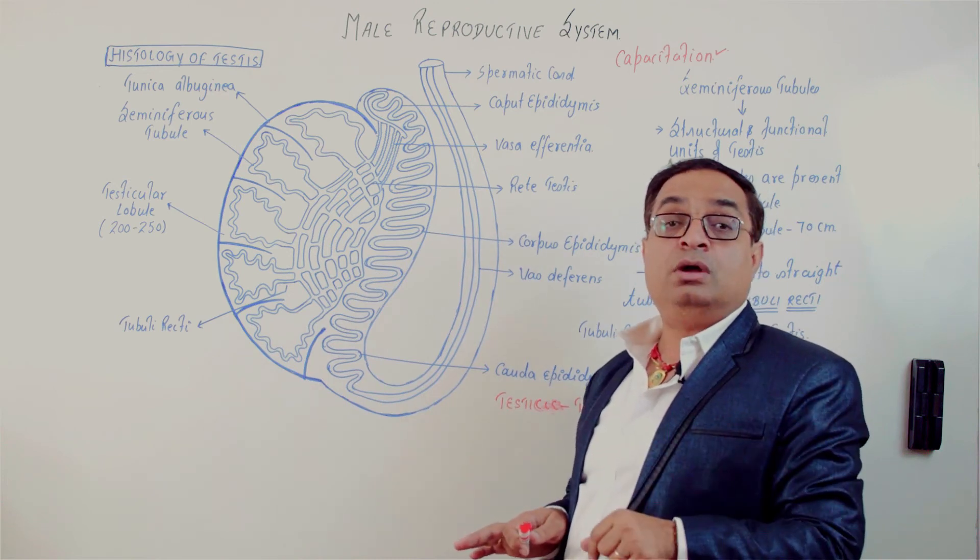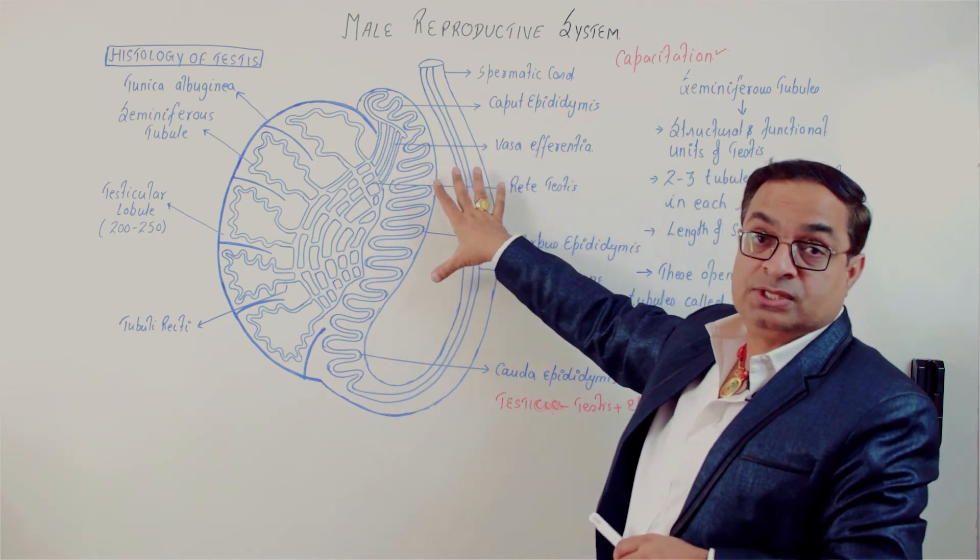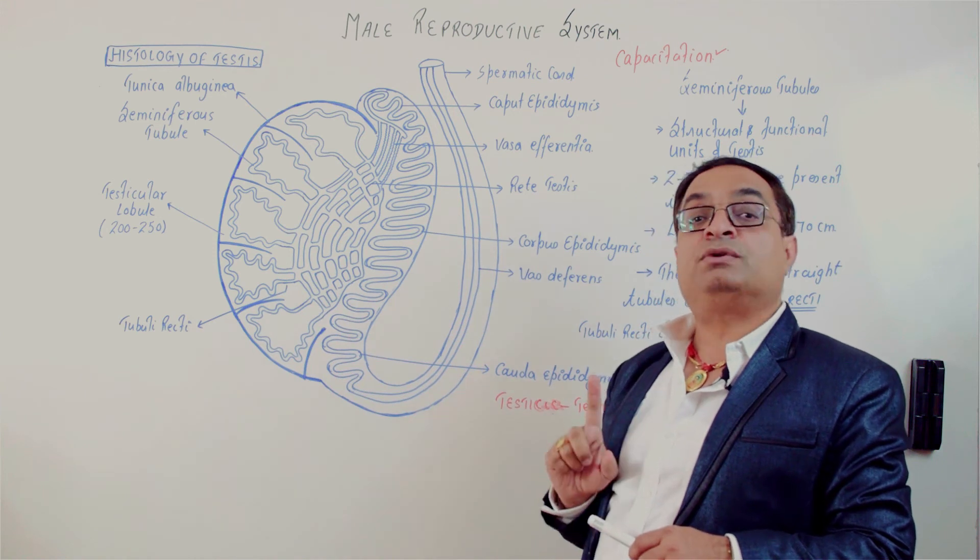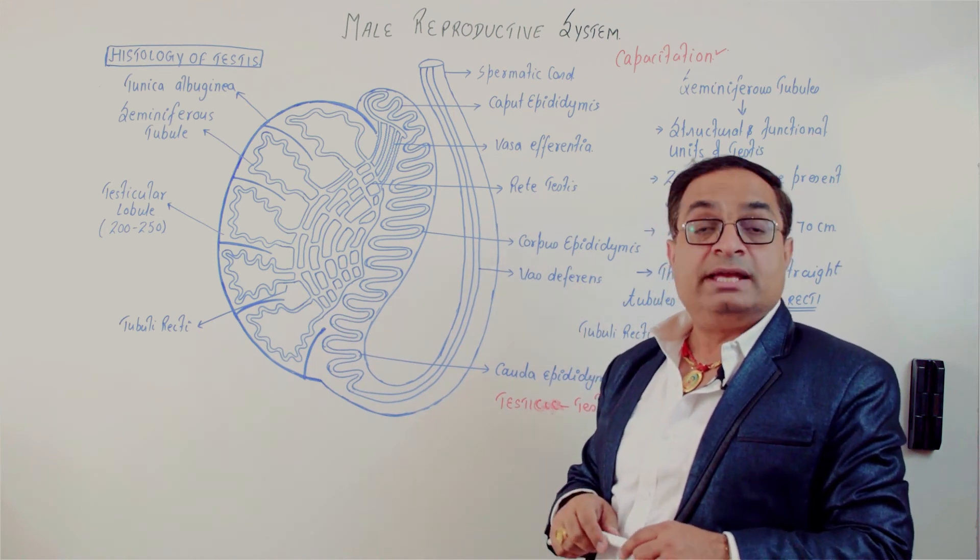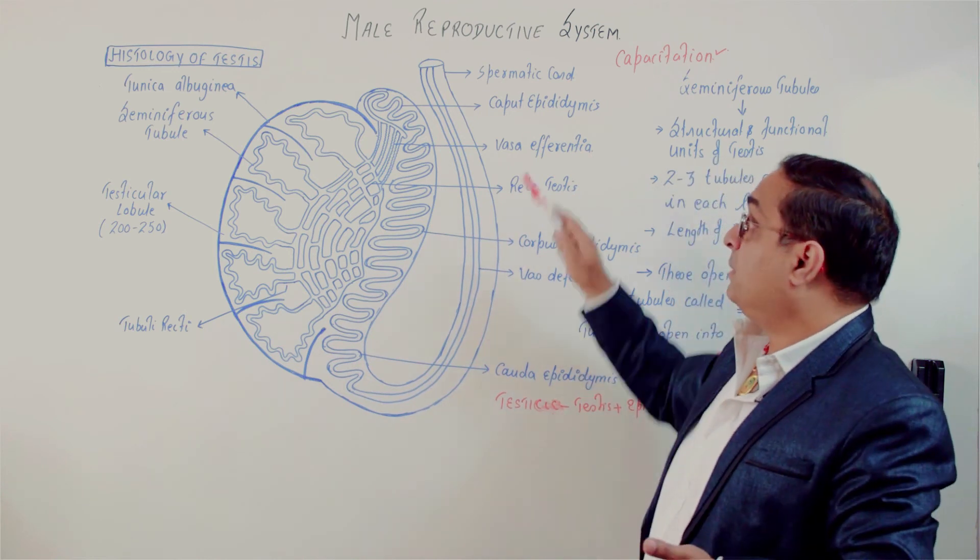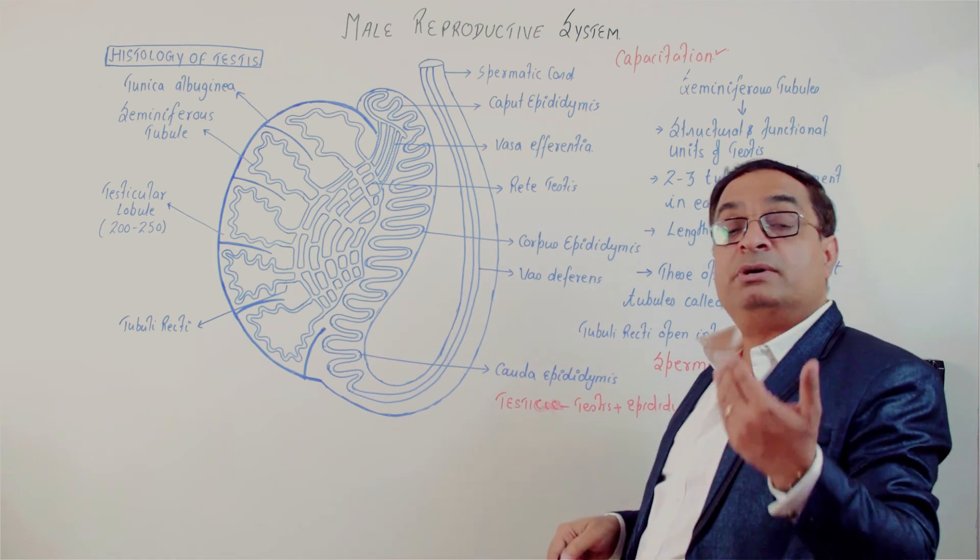So what are the functions of epididymis? Epididymis is the site of maturation of sperms. It is the site for the temporary storage of sperms. It is the site where the sperms acquire motility. As I said, percentage of motility and pattern of motility changes as the sperms move from the caput to the cauda region.